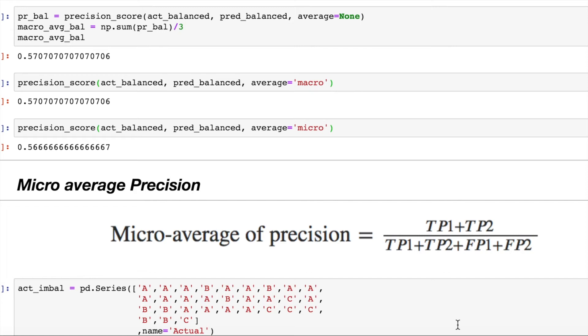So micro average of precision is basically calculated by taking the sum of all true positives per class, taking the sum of true positives in the denominator plus taking the sum of false positives in the denominator, adding the values and calculating an overall micro average of precision and not macro. Macro was different, micro is different.